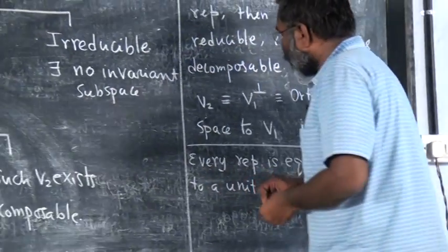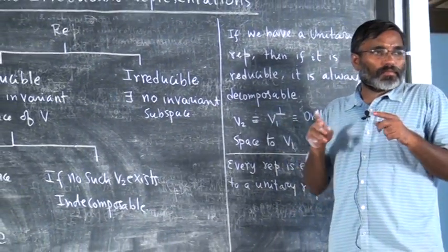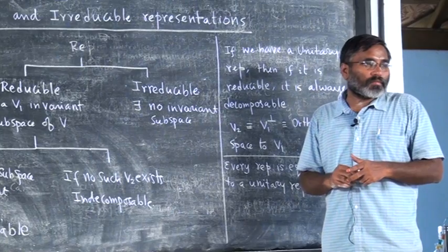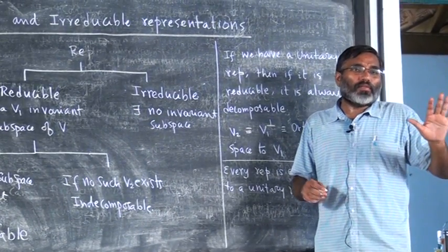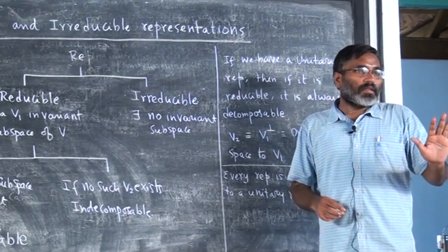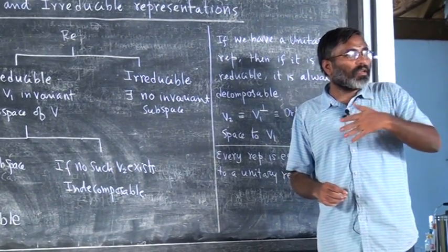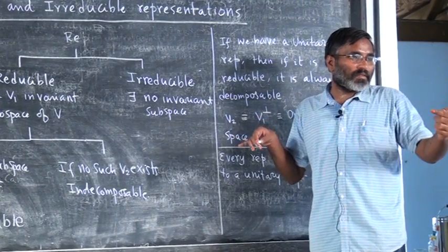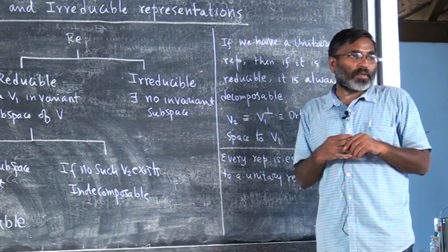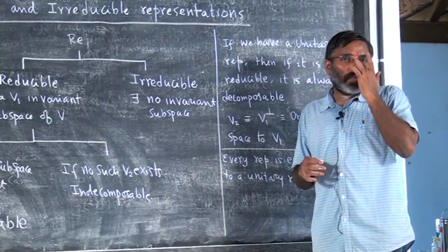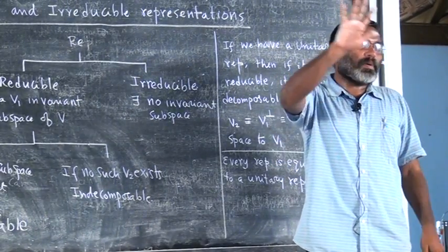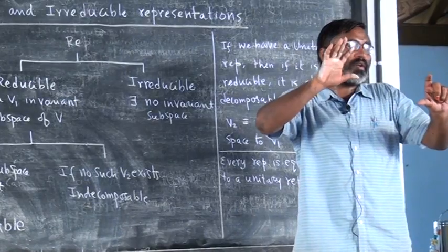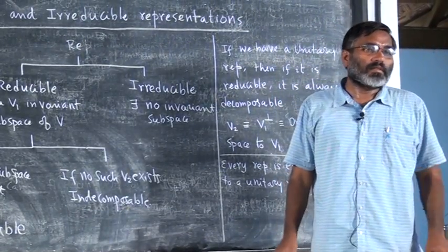V1 perpendicular is the set of all vectors perpendicular to all vectors in V1. For example, if you take V1 as the xy-plane, the set of all vectors along the z-direction are perpendicular to all vectors in the xy-plane. So if V1 is the xy-plane, V2 is the entire z-axis. If you take a three-dimensional space where the xy-plane is V1 and V2 is the z-axis, then the direct sum of the xy-plane plus the z-axis gives you the full three-dimensional space.